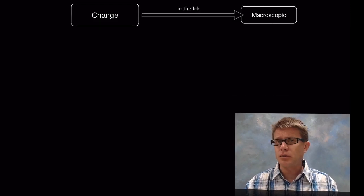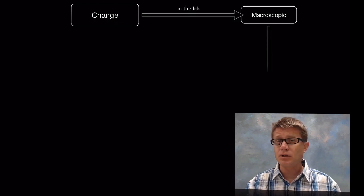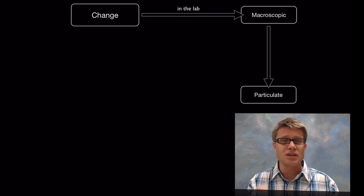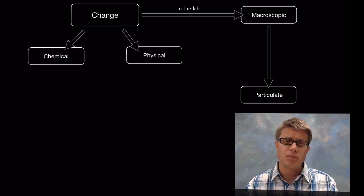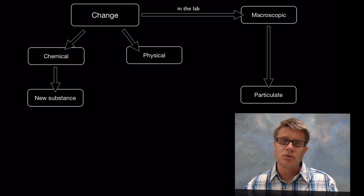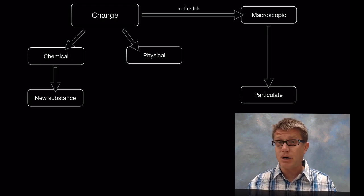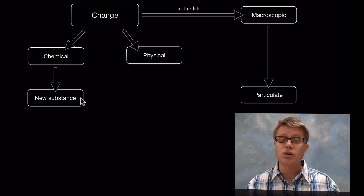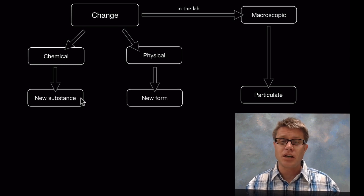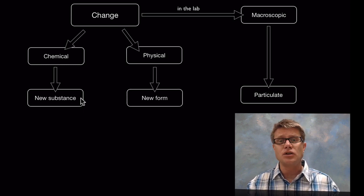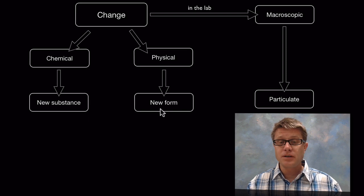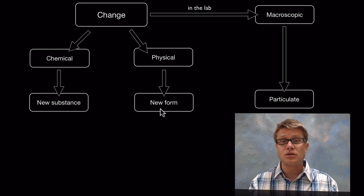Change that we see in the laboratory is change that we're observing at the macroscopic level — at the very big level. We can't really see the particulates; we can't see the atoms and the bonds as they break and reform. So we have to infer that through laboratory work. Changes can either be chemical or physical in nature. In a chemical change, we're forming a new substance — breaking bonds and forming new bonds, creating something that wasn't there before. In a physical change, we still have the same substance, it's simply in a new form. An example of a chemical change would be converting food into carbon dioxide and water. A physical change might be taking water and turning it into water vapor.